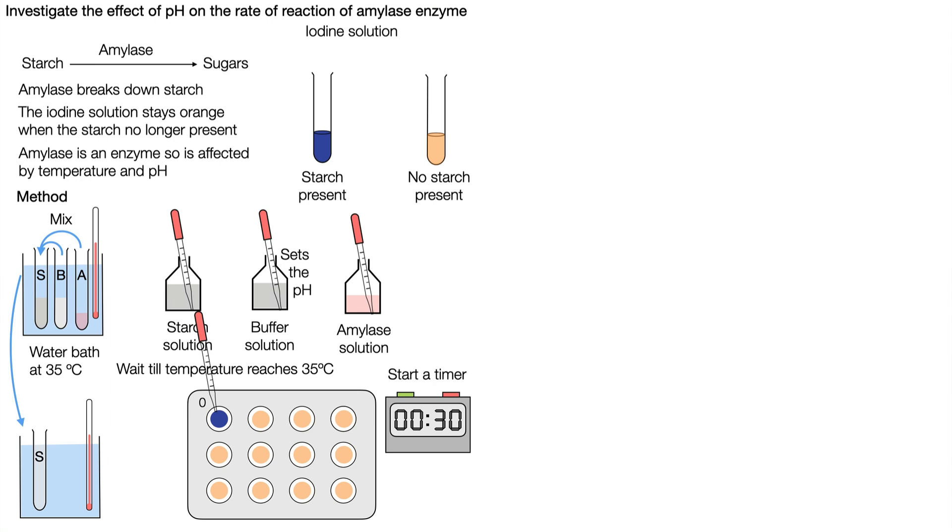We would start a timer immediately and after 30 seconds we would take a second sample and you can see there is still starch present there, and every 30 seconds we would add a drop to our iodine solution in the spotting tile.